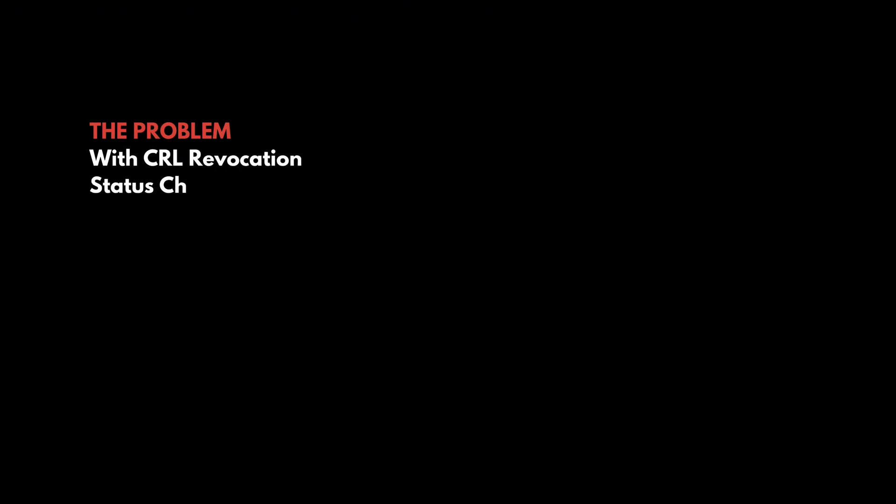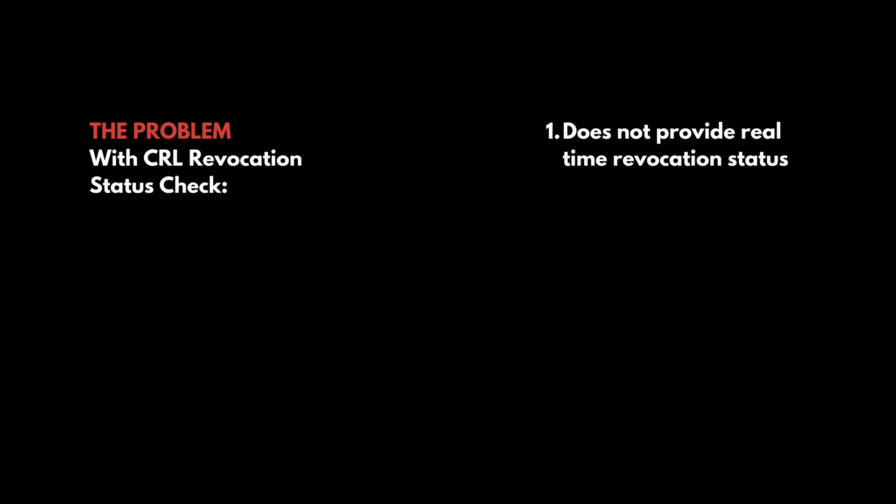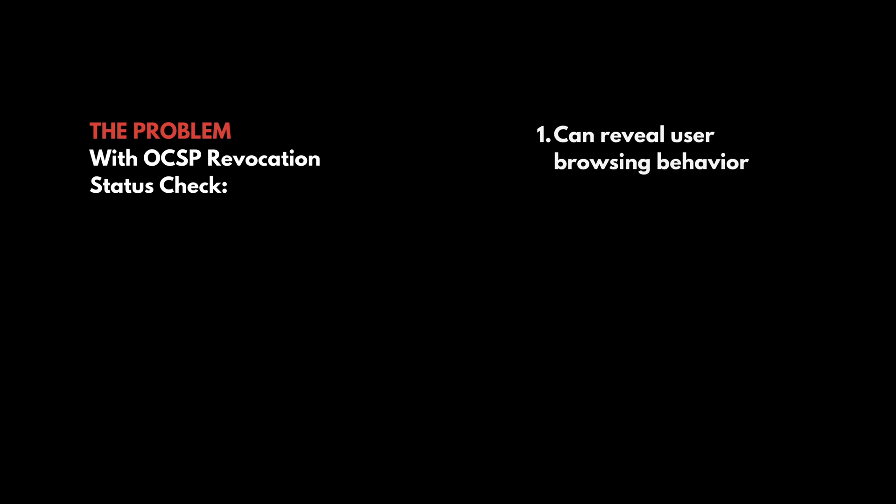The problem with the CRL revocation method is that CRL does not provide real-time revocation status, which means there's a risk of a browser accepting a revoked certificate unknowingly. Despite this shortcoming, the CRL method is favored over OCSP because: first, OCSP requests can expose user browsing behavior. The OCSP responder logs requests capturing the client's IP address, which can reveal website access patterns. This data could be shared or accessed by third parties for surveillance. In contrast, CRL preserves privacy since the web browser doesn't send information about specific websites.